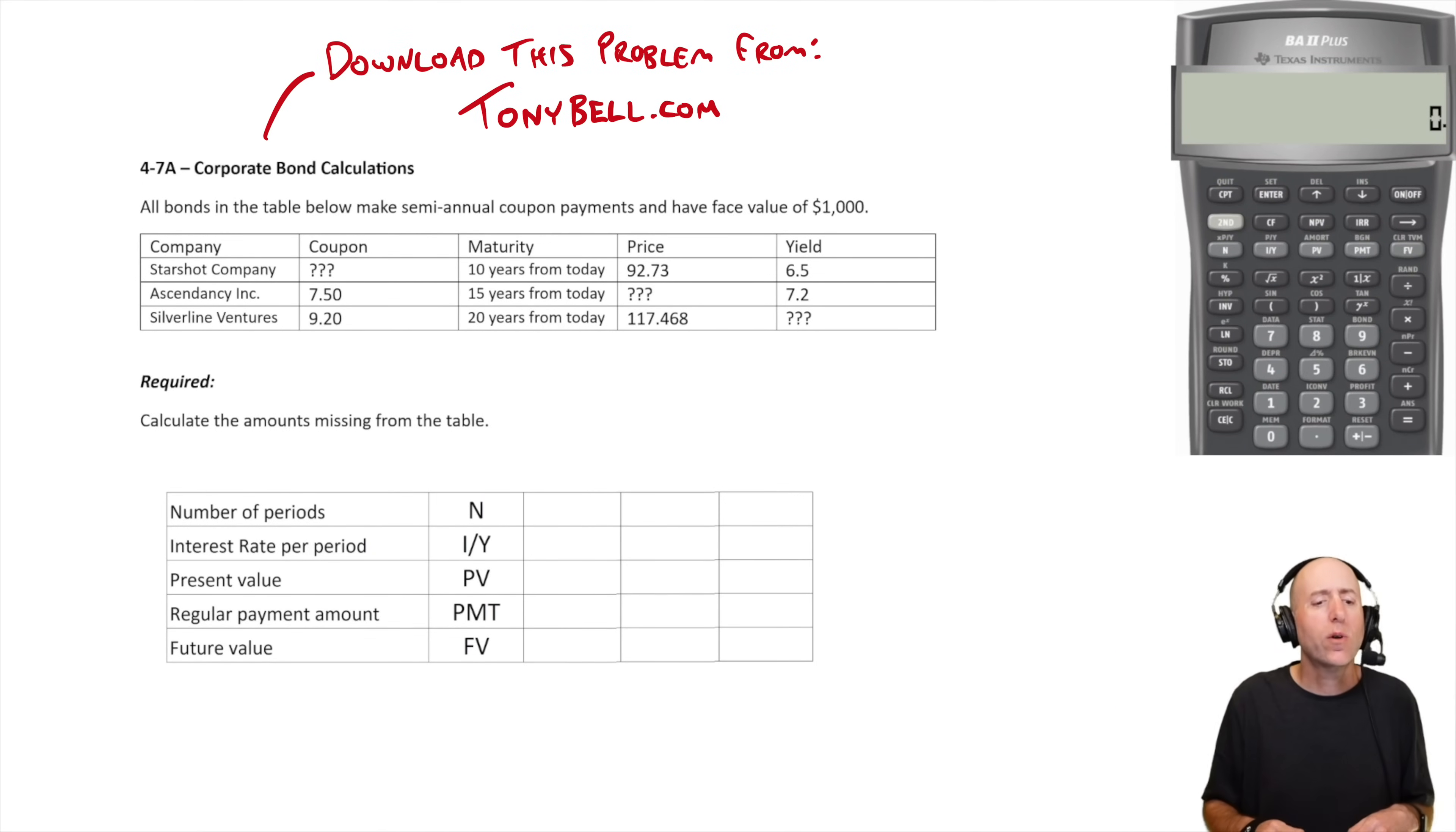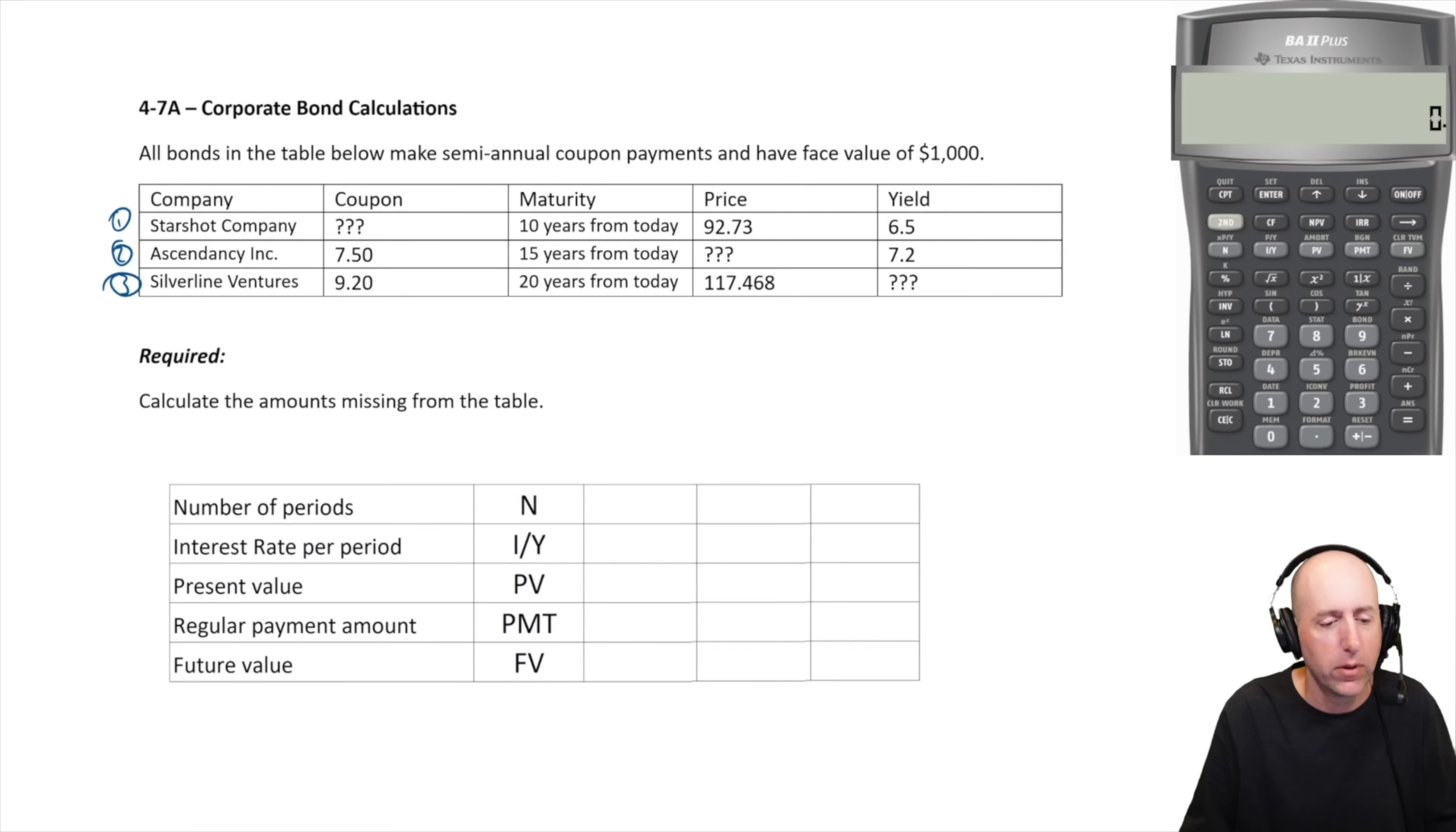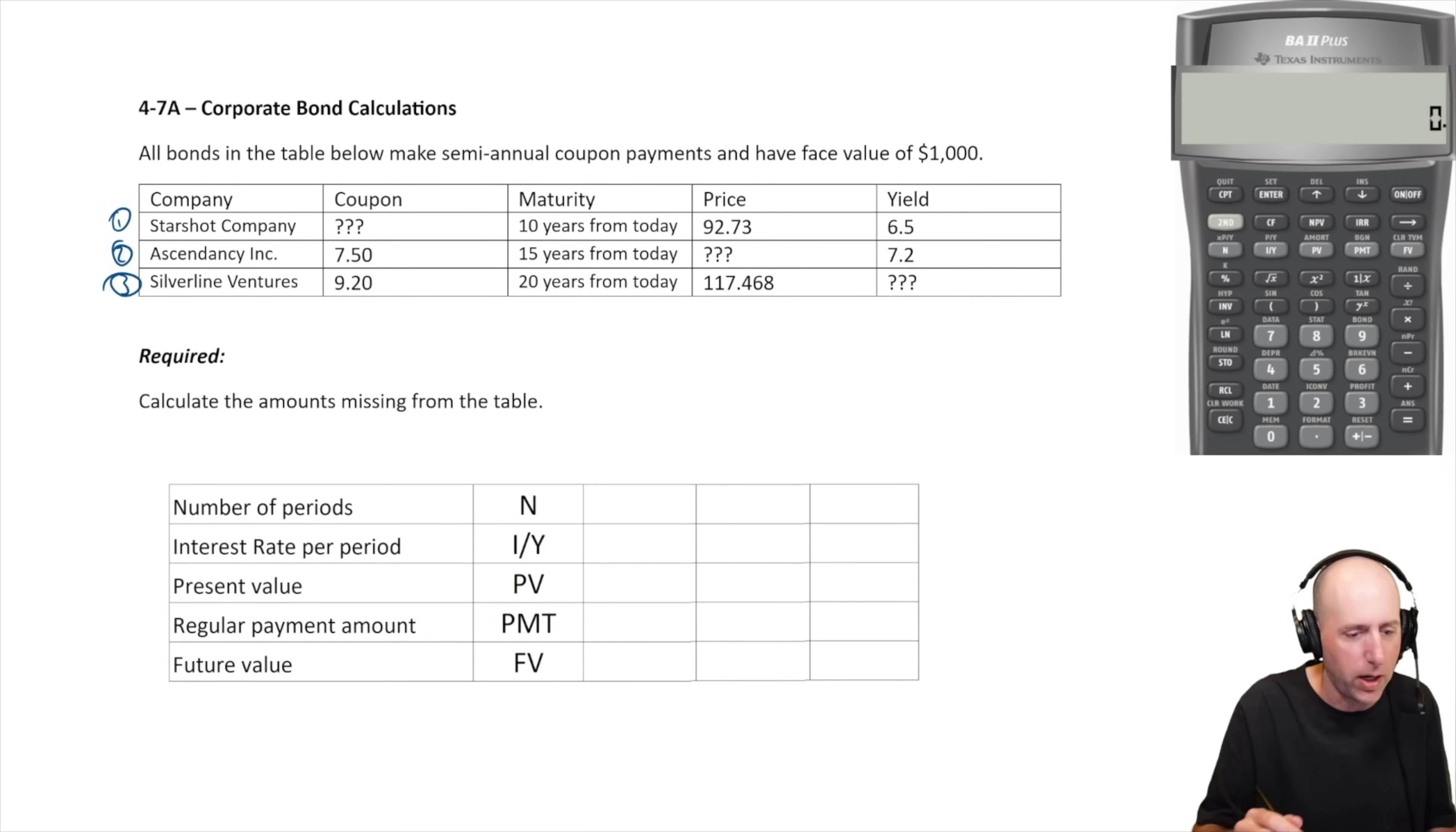Let's have a run through problem 47a - more bond calculations. Lots of present values to be done. I'll do them all in my financial calculator first, and then I'll circle back and do the first one by hand afterwards. If you have to do it by hand, I understand it's more time consuming and honestly more tedious, but it's doable, it's not hard, you just got to take your time.